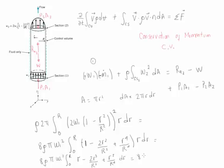The integral of this is 4 rho pi W1 squared and then we have r squared divided by 2 minus 2r to the 4th over 4R squared plus r to the 6th over 6R to the 4th, and we evaluate it from 0 to R.